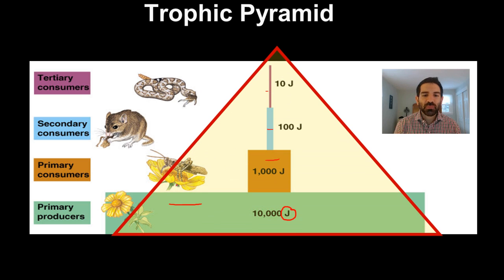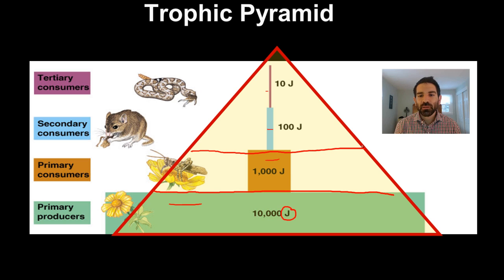The classic shape that this makes, you might see it this way, is what's called a trophic pyramid. A trophic pyramid shows the amount of energy available at each trophic level. And it gets less and less as you move up.